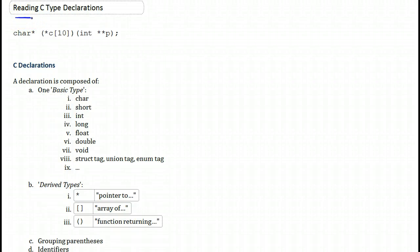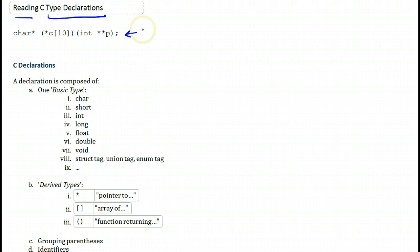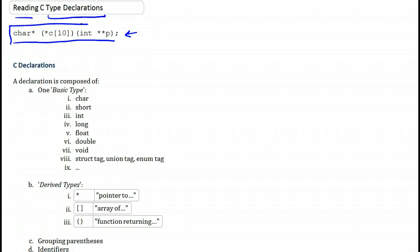In this video we will learn how to read type declarations in C. This is an example of a type declaration in C, and hopefully by the end of this video you'll be able to read something like this and make sense of it.